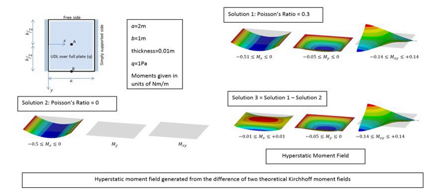The basic stress analysis problem can be formulated by Euler's equations of motion for continuous bodies, which are consequences of Newton's laws for conservation of linear momentum and angular momentum and the Euler–Cauchy stress principle, together with the appropriate constitutive equations. These laws yield a system of partial differential equations that relate the stress tensor field to the strain tensor field as unknown functions to be determined. Solving for either then allows one to solve for the other through constitutive equations. The external body forces appear as the independent right-hand side term in the differential equations, while the concentrated forces appear as boundary conditions.